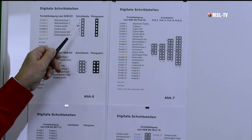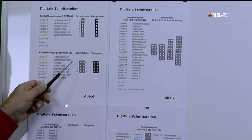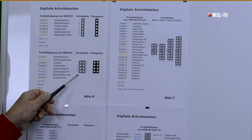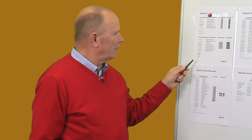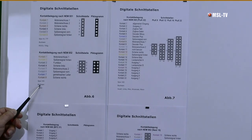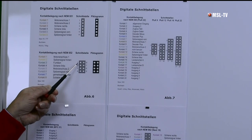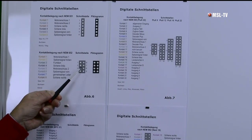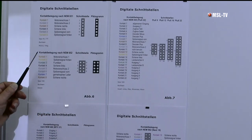Die 8-polige Schnittstelle nach NEM 652 war die allererste – das ist die typische H0-Schnittstelle. Wiederum haben wir in der Leiterplatine Buchsen, sprich Löcher, in welchen wir die Pins des Decoders einstecken können. Sie wird hauptsächlich verwendet von Roco.